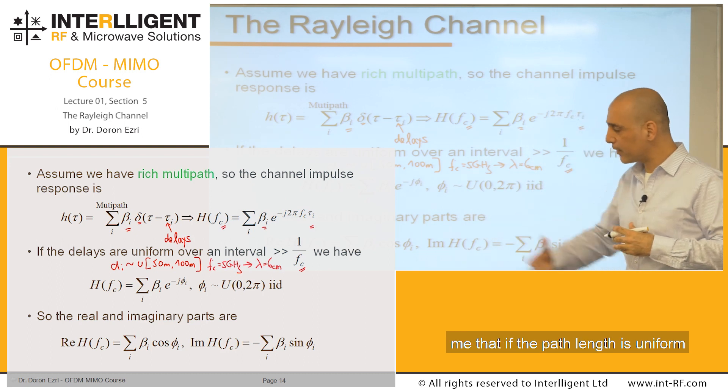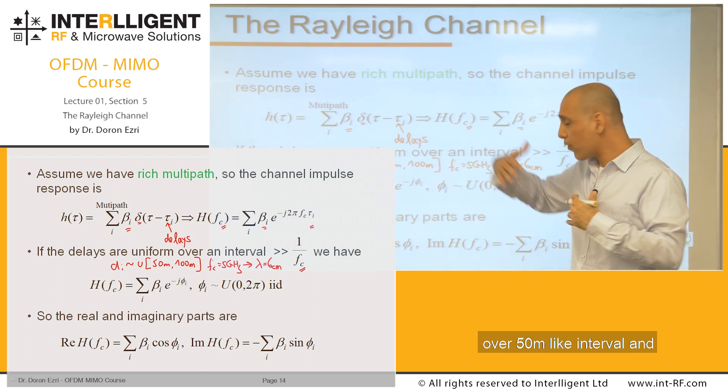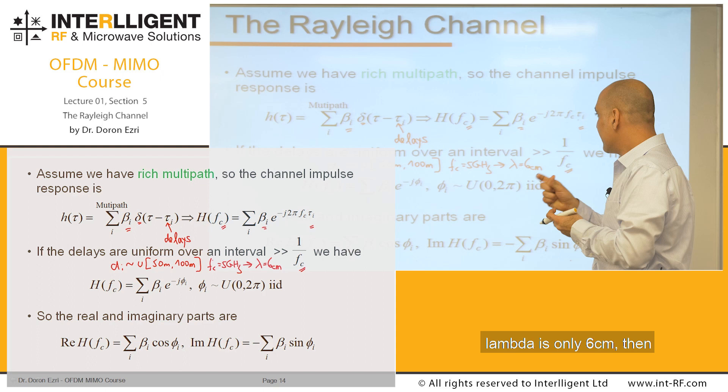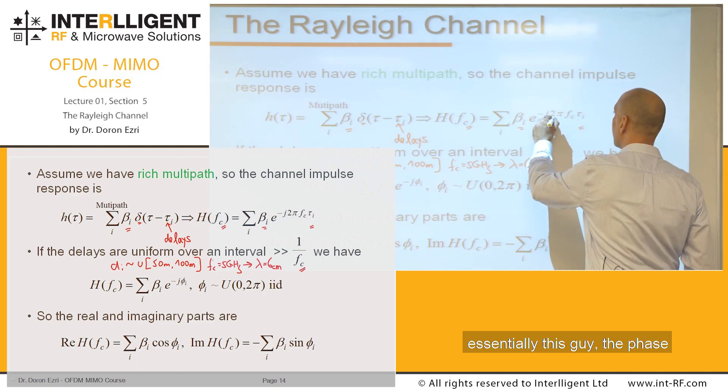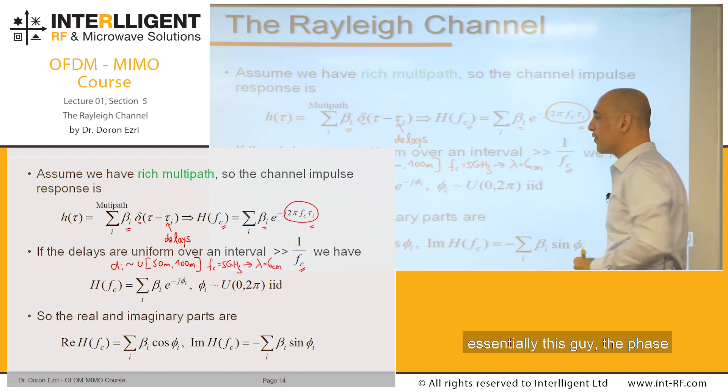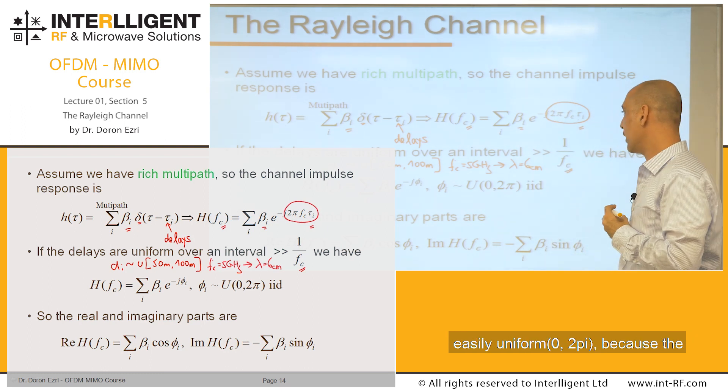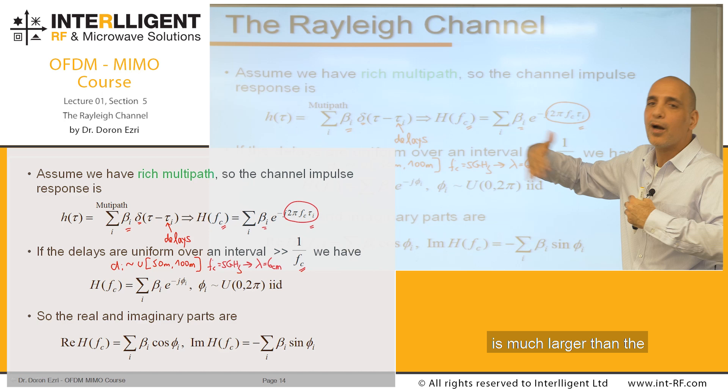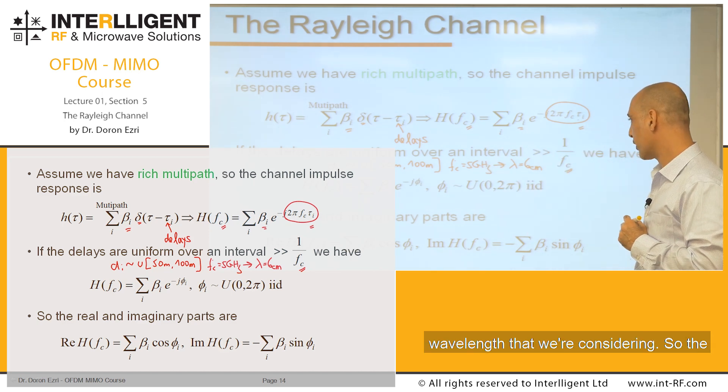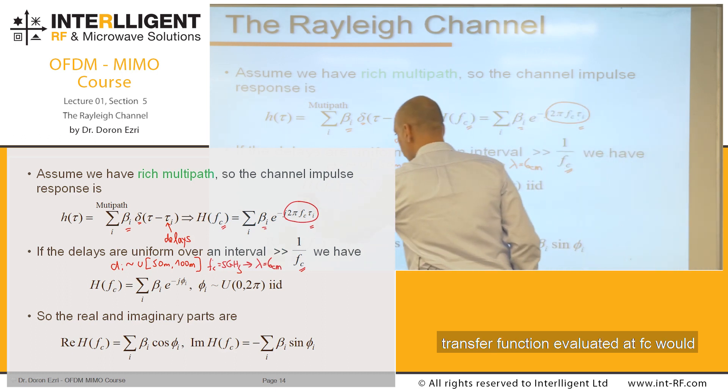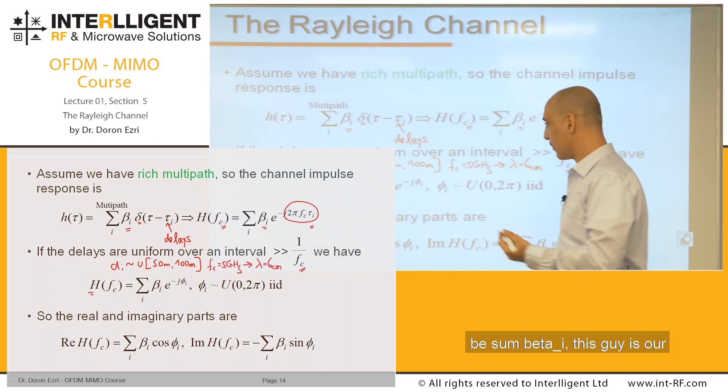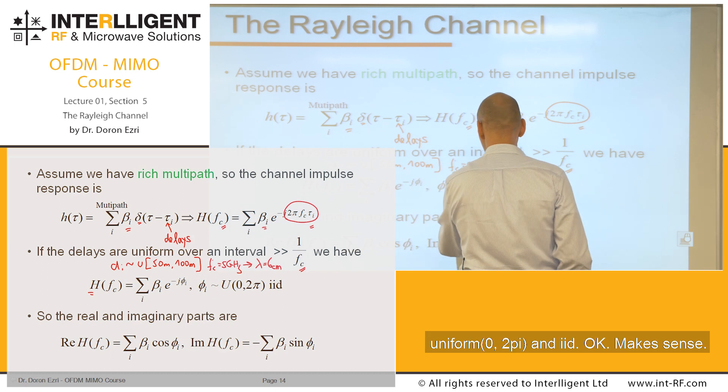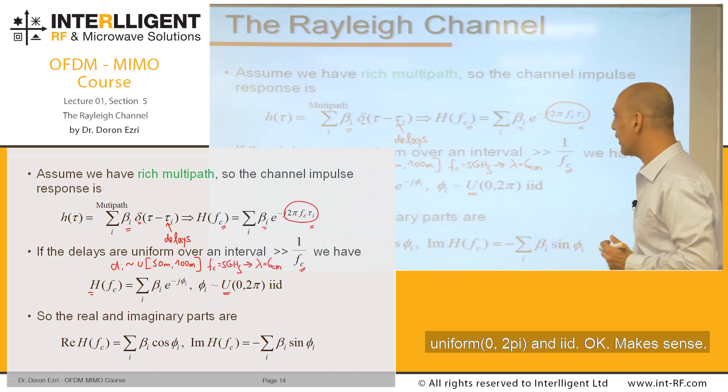So I think you can agree with me that if the path length is uniform over 50 meters and lambda is only 6 centimeters, then essentially the phase can be assumed very easily uniform 0 to 2π, because the interval on which the length is uniform is much larger than the wavelength that we're considering. So the transfer function evaluated at fc would be some beta_i, these guys are our strength. And phi_i, I assume are uniform 0 to 2π and iid.